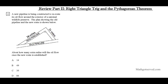Welcome to part two of the review series. We're going to focus on right triangle trig and the Pythagorean theorem. Question 4 describes a new pipeline being constructed to reroute oil flow around the exterior of a National Wildlife Reserve. The plan shows the old pipeline and the new route, and asks how many extra miles the oil will flow once the new route is established.